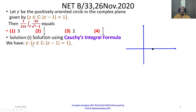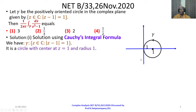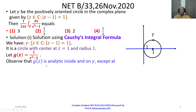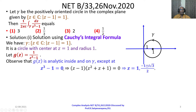We have gamma: the set of all z in C such that modulus of z minus 1 equals 1. It is a circle with center at z equals 1 and radius 1. Let g(z) equal 1 over z cubed minus 1. This function is analytic inside and on gamma except at the poles. The poles of g(z) are given by the zeros of the denominator: z cubed minus 1 equals 0, which factors as (z minus 1)(z squared plus z plus 1) equals 0.